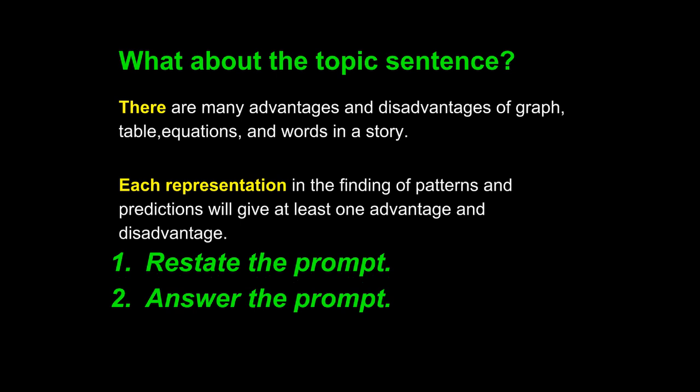Each representation in the finding of patterns and predictions will give at least one advantage and disadvantage. The phrase 'at least one' indicates an answer. It shows your math teacher that the subsequent paragraph will discuss one advantage and disadvantage of each representation. It is important to answer a prompt in the topic sentence to give the reader an indication of what will follow. Something as simple as 'at least one' can help.